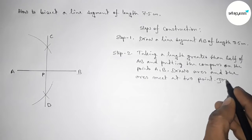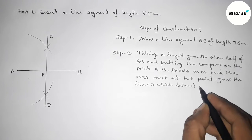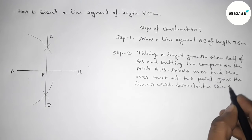So now join the line CD which bisects the line AB at point P.